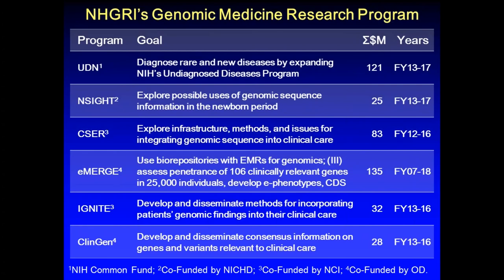The Undiagnosed Diseases Network, or UDN, was built on a program that began at the NIH. We recognized that there were patients who defied diagnosis, going from hospital to hospital and physician to physician, sometimes for decades, unable to get a diagnosis, yet if one used genomic techniques and other sophisticated laboratory techniques, often you could come up with a diagnosis for them. It has been funded in fiscal years 2013 to 2017.